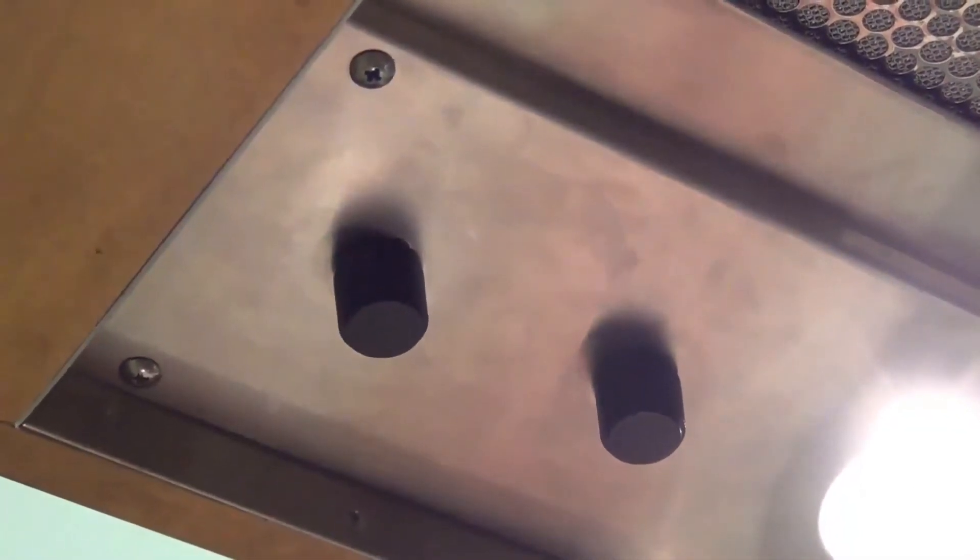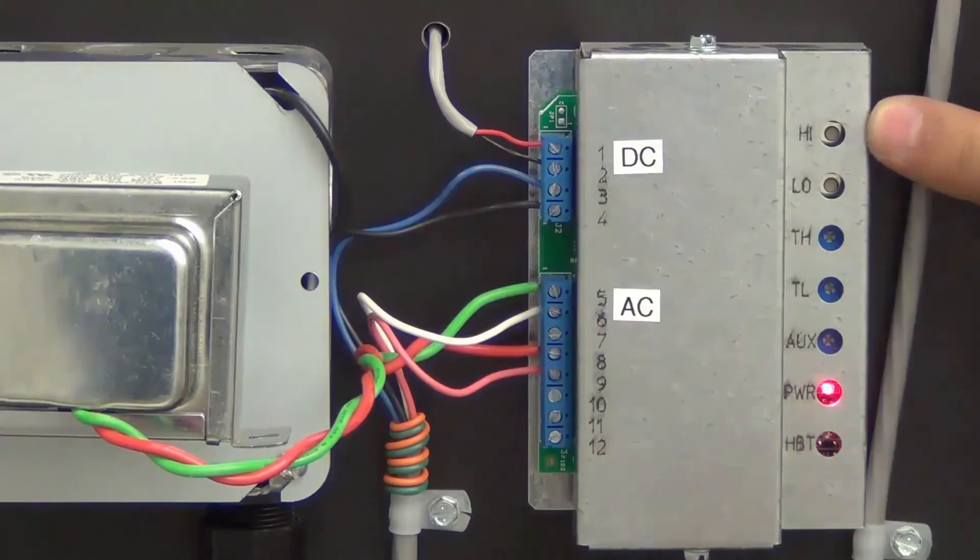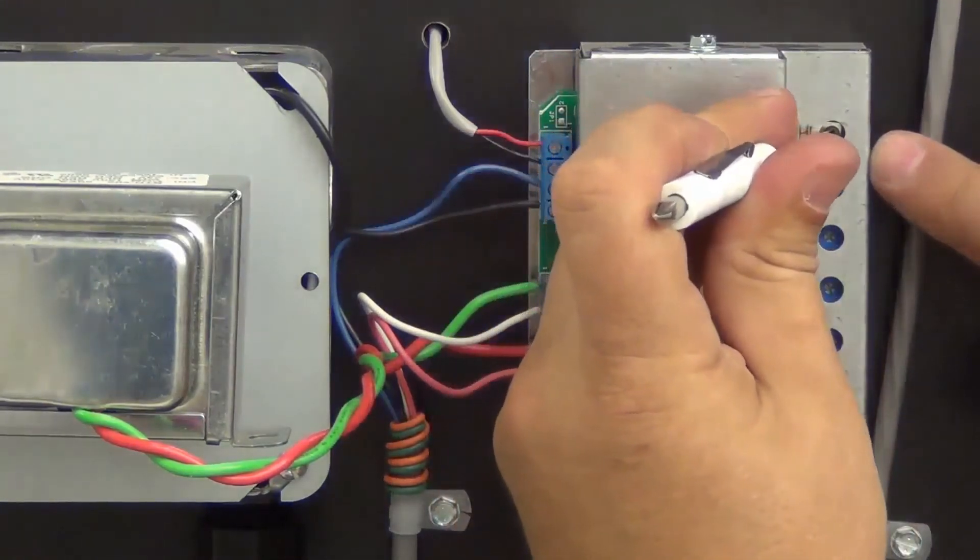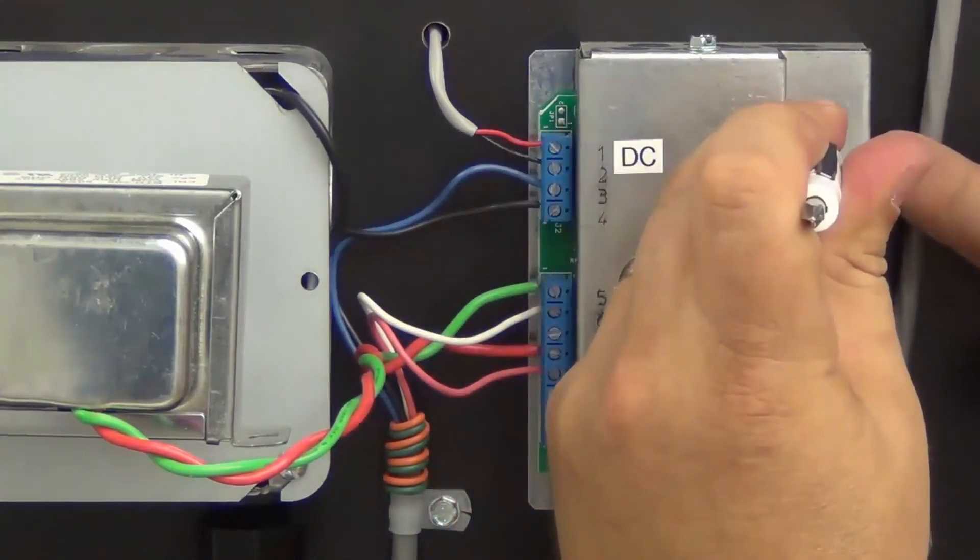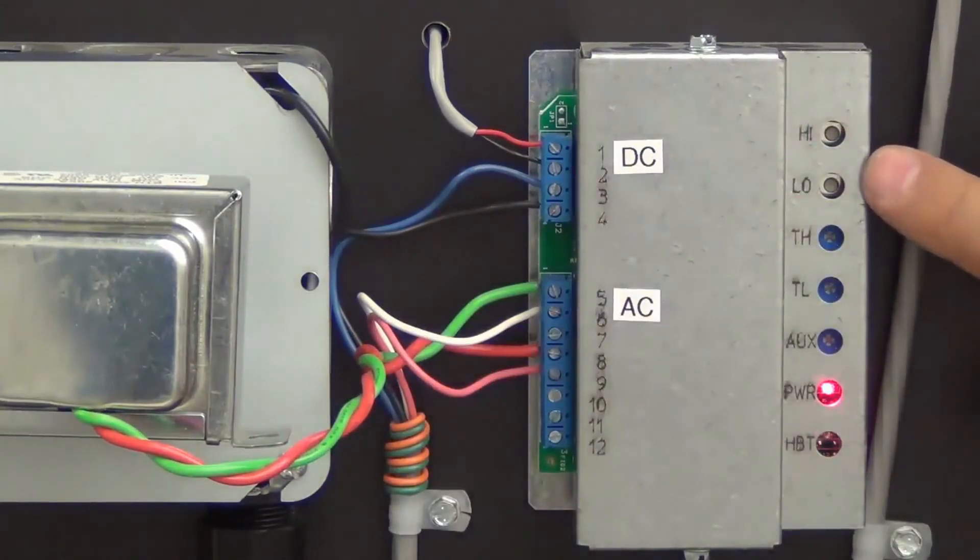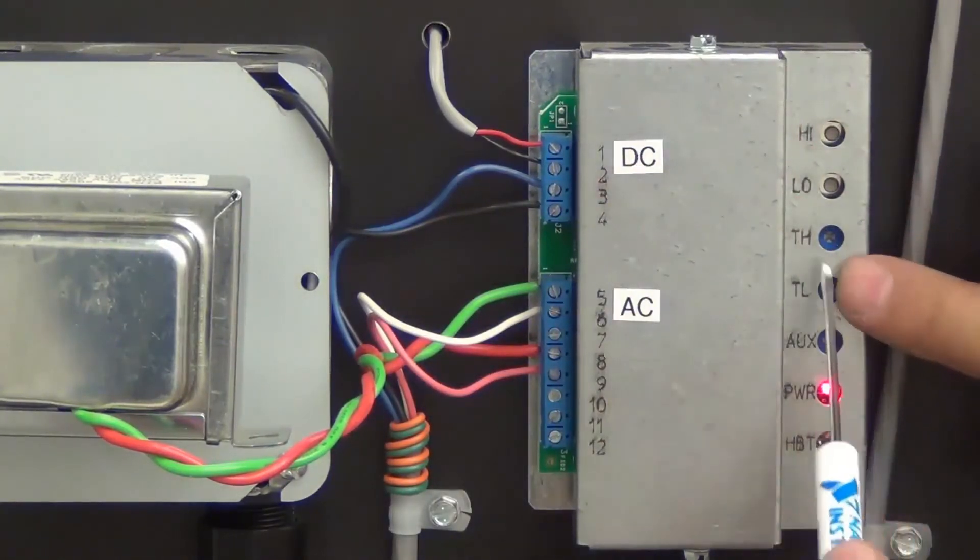Turn on the exhaust fan to high. On the controller, push in the high button for a couple of seconds. Adjust the high trim pot to match the exhaust airflow.